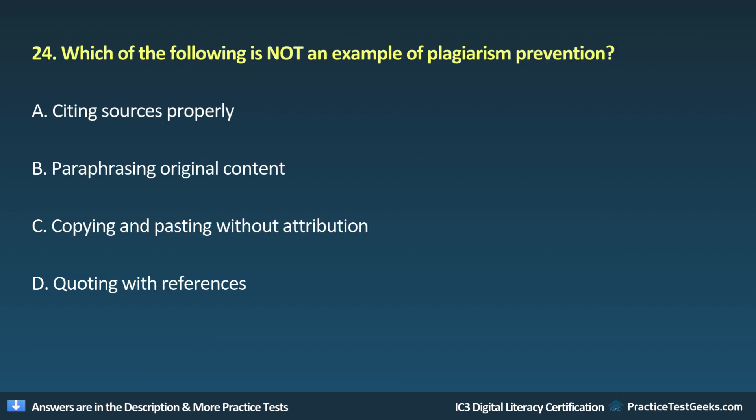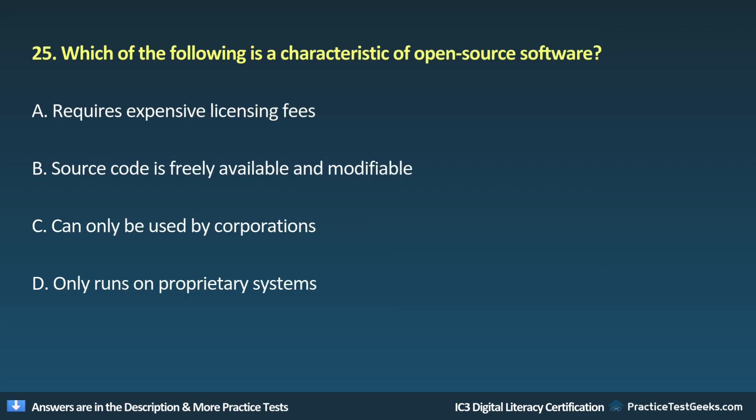Question 24: Which of the following is not an example of plagiarism prevention? A. Citing sources properly. B. Paraphrasing original content. C. Copying and pasting without attribution. D. Quoting with references.